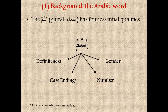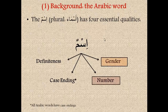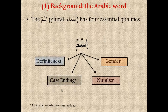The ism, the plural of which is asma', has four essential qualities. These are four very basic and fundamental characteristics of the ism, and they are: gender, number, case ending, and definiteness. For clarification, case ending is not exclusive to the ism — all Arabic words have case endings, and verbs have case endings as well. But whenever you see an ism, think about these four qualities: what's the gender, what's the number, what's the case ending, and what's the definiteness — meaning, is it definite or indefinite?